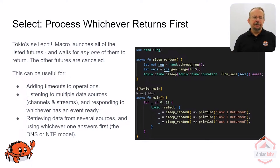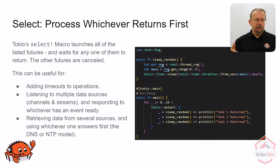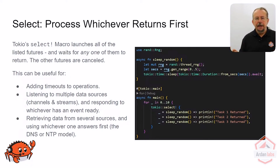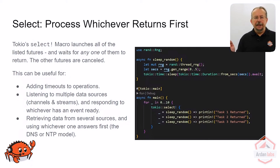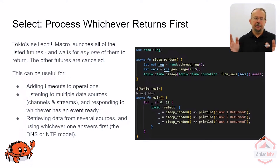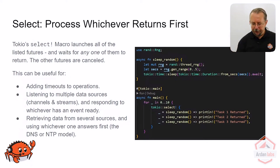This is perfect if, for example, you have multiple channels of data coming in, and you want to make sure that you answer whichever one gives you some data first. If you have a bunch of potential data sources and you don't necessarily know which ones are going to be available or the fastest, you can select on all of them. This is what DNS and NTP do — they send out a request to all of them and go with whichever one answers first.